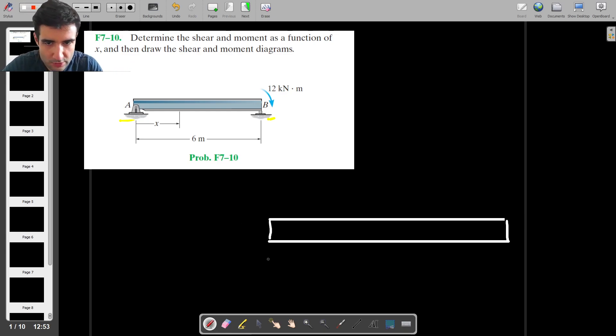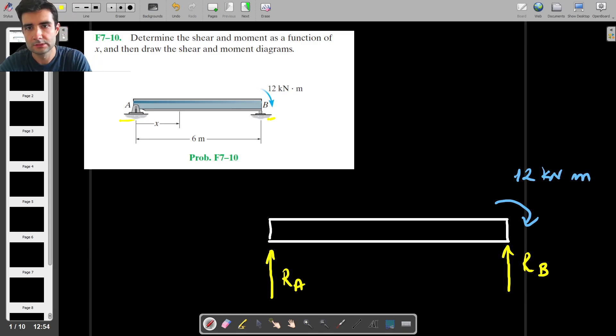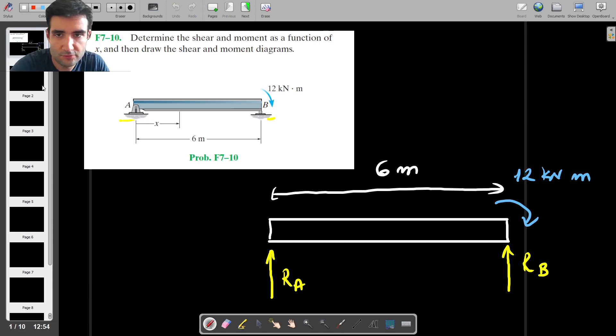At A we have just a vertical reaction force that I'm going to call RA, and then at B we have RB, and then here we have an external moment which is given to us as 12 kNm. We know the length of the beam as 6 m, so let's use that to find what the two reaction forces are.